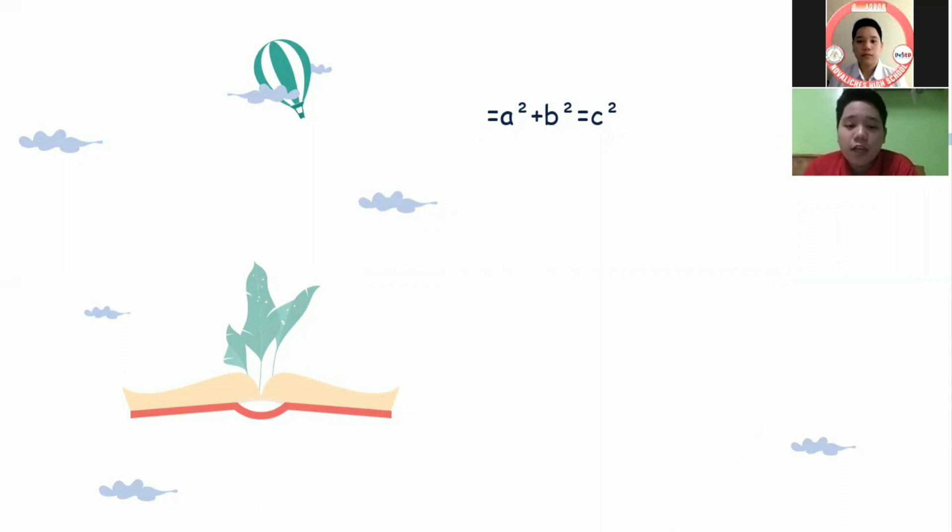is equal to the square of its longest side or the hypotenuse denoted by small letter c. We need to substitute the given length in this equation.